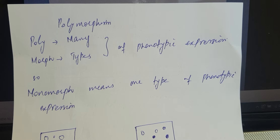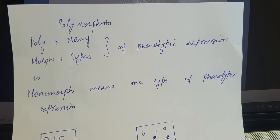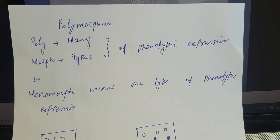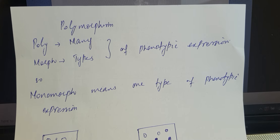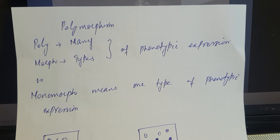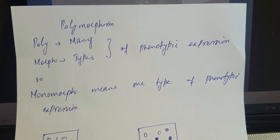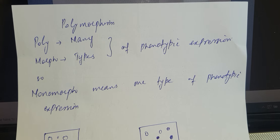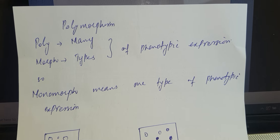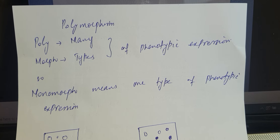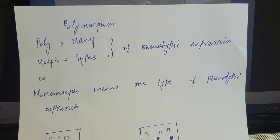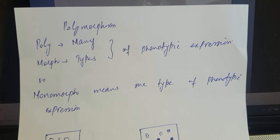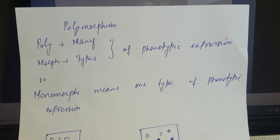As we have discussed earlier, polymorphism is the attribute of a population. Different forms of a gene, or different forms of an allele present in a population, is called polymorphism. Poly means many and morph means types — that is, different forms or different types of phenotypic expressions that a population shows.